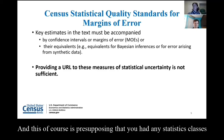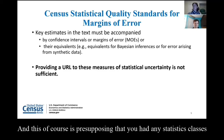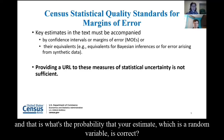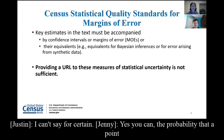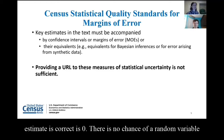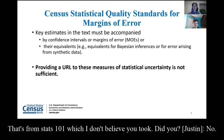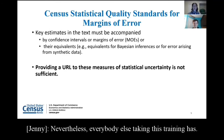All right, let me ask you a different question — presupposing that you've had any statistics classes. What's the probability that your estimate, which is a random variable, is correct? The probability that a point estimate is correct is zero. There is no chance that a random variable is the truth. You have to provide a measure of uncertainty. That's from stats 101.